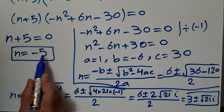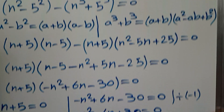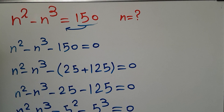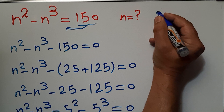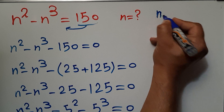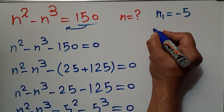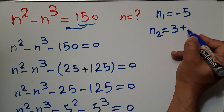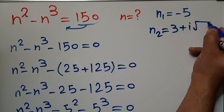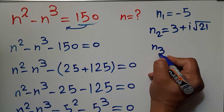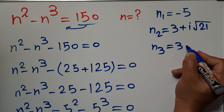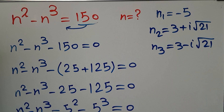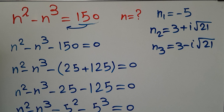So our three solutions are: N1 equals negative 5, N2 equals 3 plus i times the square root of 21, and N3 equals 3 minus i times the square root of 21. Thank you for watching my video until the end. See you in the next video.